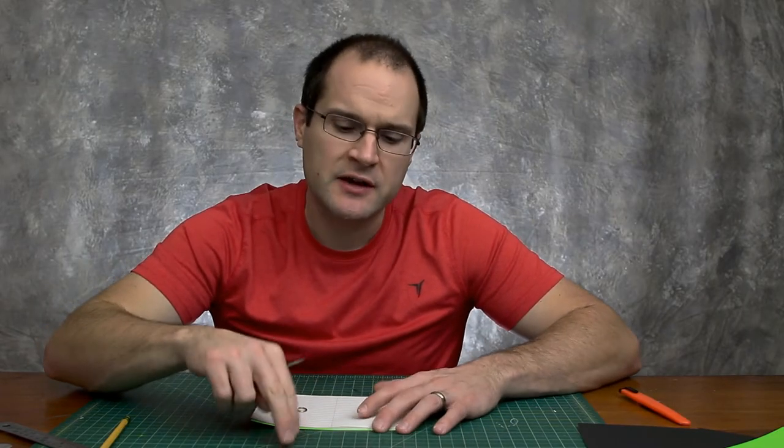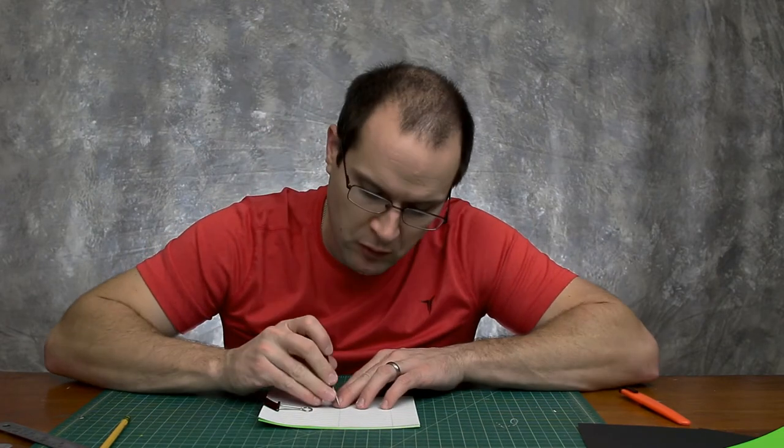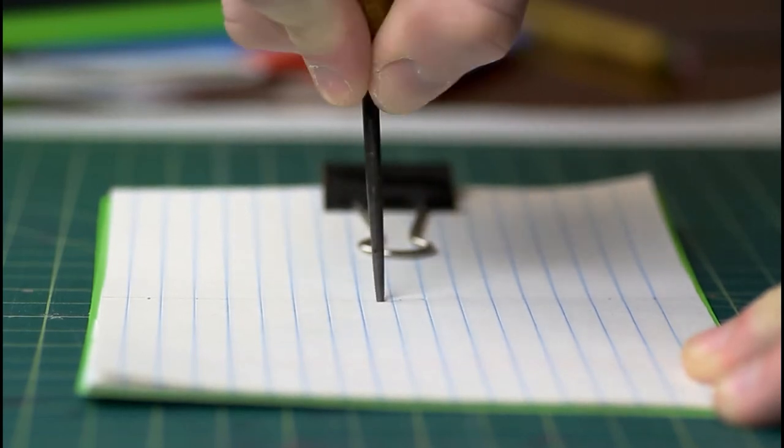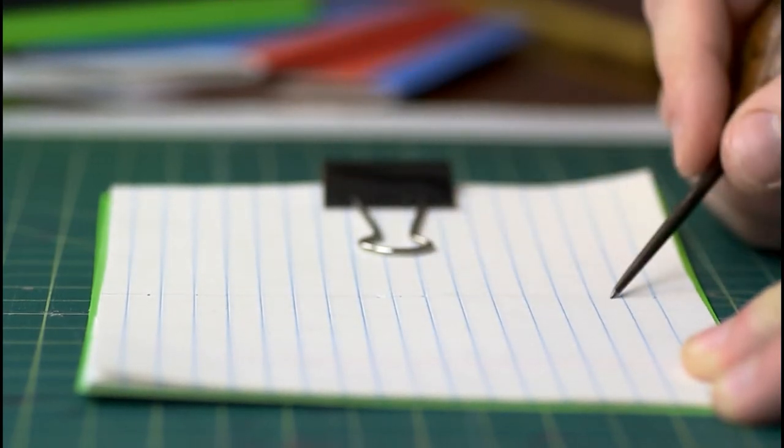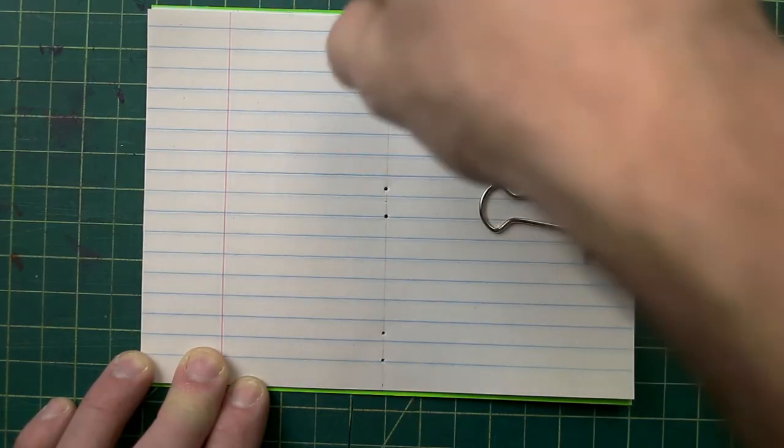Now I definitely recommend using some sort of awl. Use it on a surface that's not gonna get damaged. Maybe even put a magazine underneath it. But this is definitely the easiest way to punch a hole through all 16 sheets of paper plus the poster board. Don't use a thumbtack or anything like that. It's not quite sharp enough. I mean, you can in a pinch, but I need to make a bunch of these. So using the correct tool might be more beneficial.